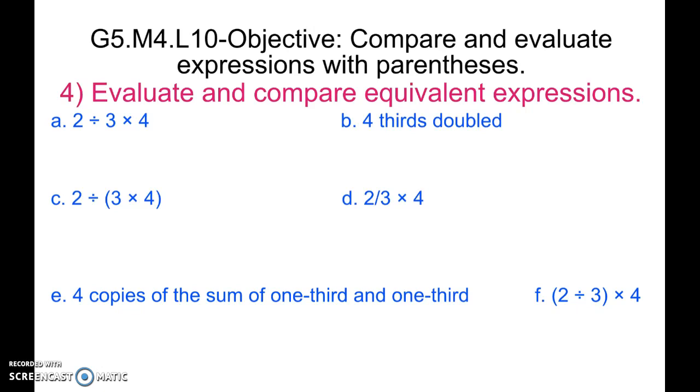In this problem, we're asked to evaluate and compare equivalent expressions. We have six expressions, and we're asked to solve them and then compare them. The first one, we have 2 divided by 3 times 4. Well, 2 divided by 3 we know is 2 thirds, times that by 4 equals 2 times 4 over 3 equals 8 thirds. B, we have 4 thirds doubled. Doubled means times 2, which equals 4 times 2 over 3, which also equals 8 thirds.